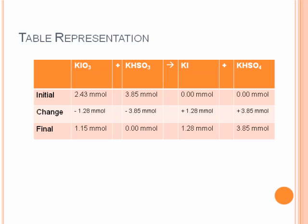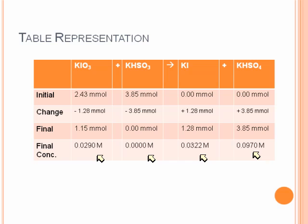Going back to our table, now we can add an extra row and put in the final concentrations of each of the reactants and products. We have 0.0290 molar for the KiO3, none of the limiting reactant left as we predicted, we have 0.0322 molar Ki and 0.0970 molar KHSO4. So those are the final concentrations of each reactant and product. This has been a tutorial on solution stoichiometry.